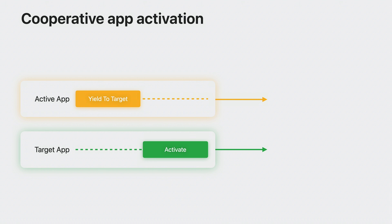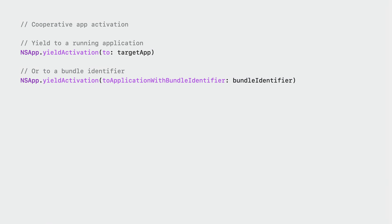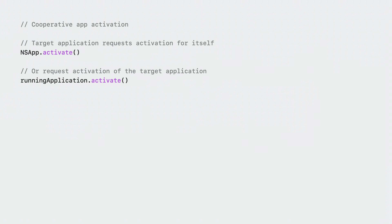Only the active application can influence the activate context. It does so by yielding to an explicit target application before the target application is activated. When the target application requests activation, the system will use the yield as part of the context when making its decision. If the request is honored, the active app will deactivate and the target app will activate; otherwise the active app remains active. NSWorkspace automatically handles this for you when opening URLs or applications. In other cases, to manually hand activation to another application, yield activation to the target via its running application or bundle identifier.